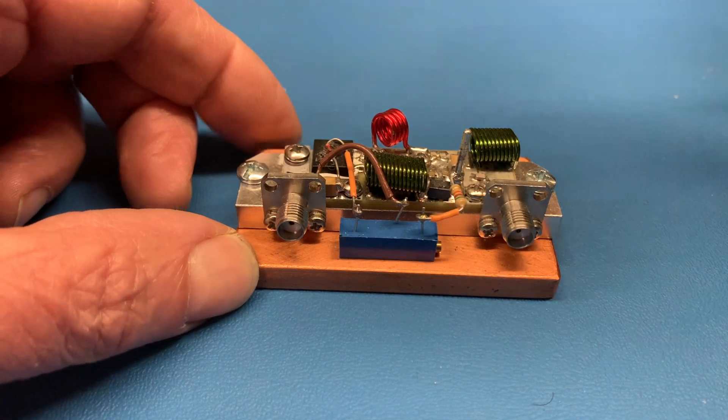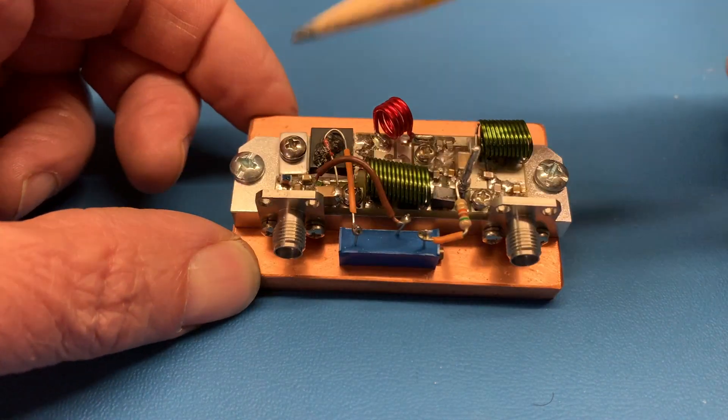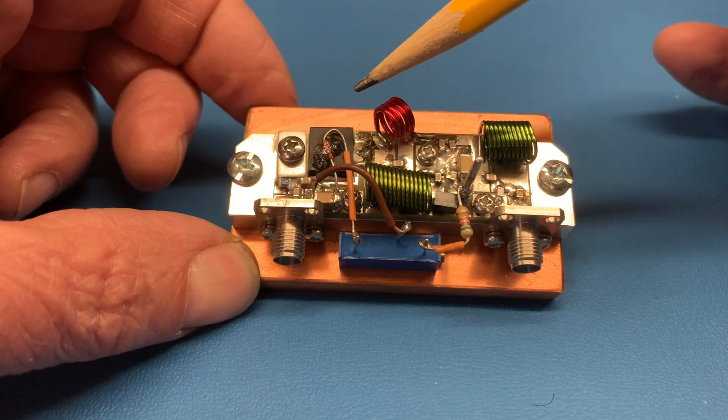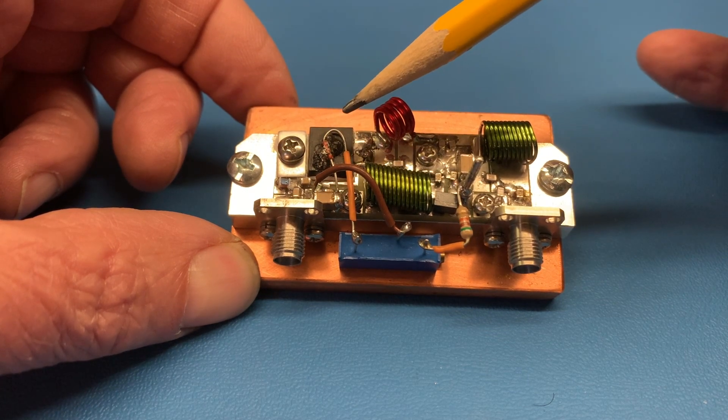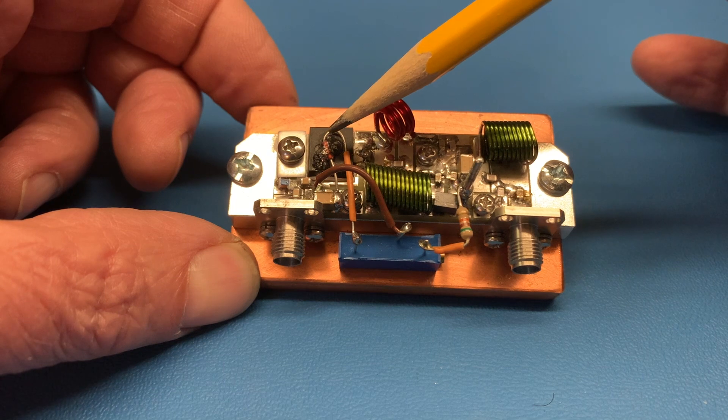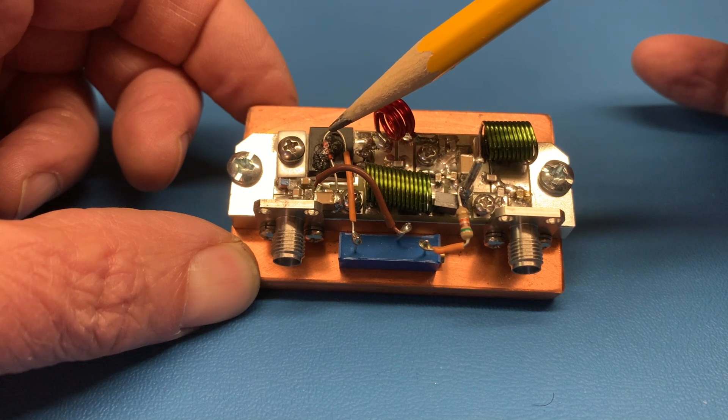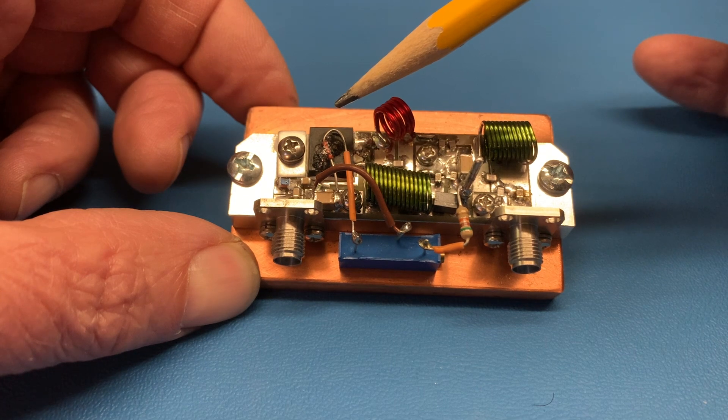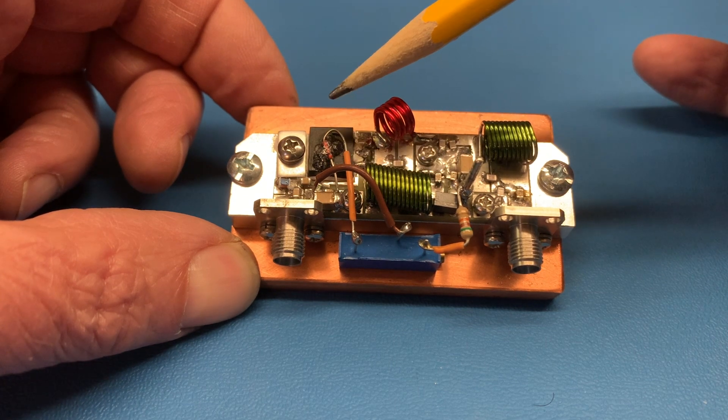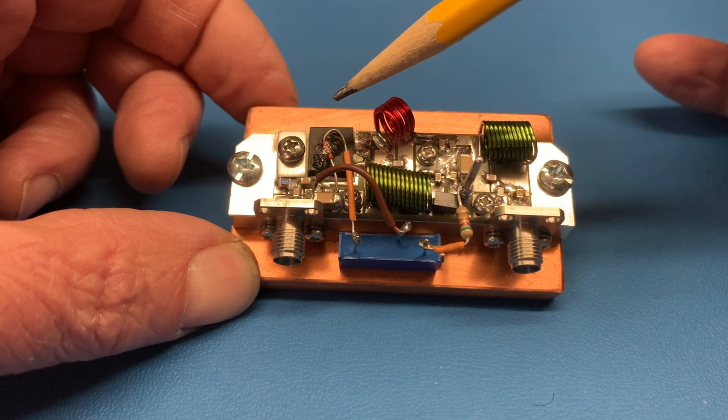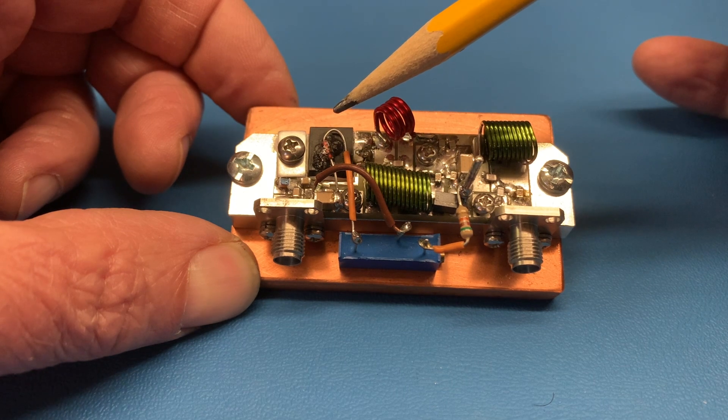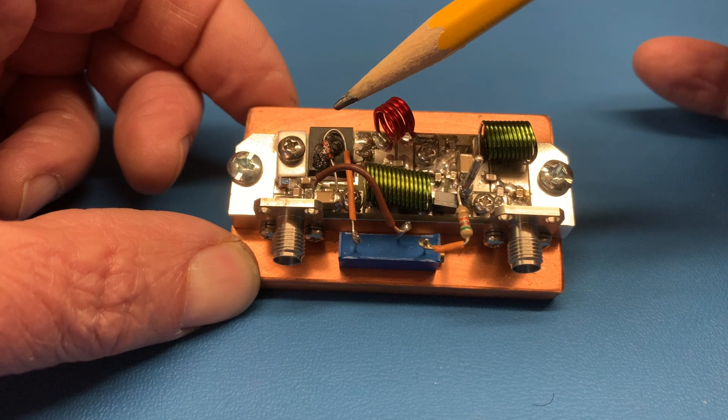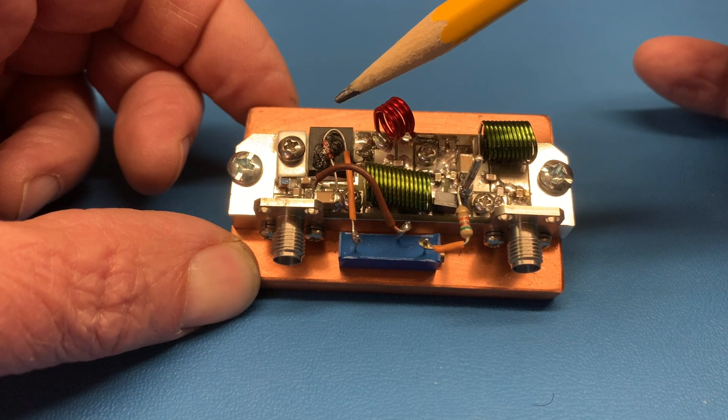Really just to run through a couple of the items on here, the input SMA goes through a matching network and is fed into the gate of the transistor itself. The little diode that's glued on to the top of the transistor is actually part of the thermal compensation in the bias network. As the device gets hotter it becomes more conductive and the diode helps to bring the bias down so the transistor does not go into thermal runaway.